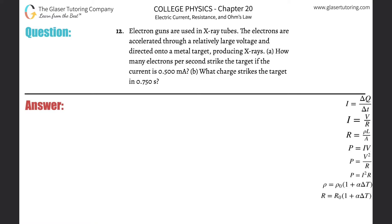Number 12. Electron guns are used in X-ray tubes. The electrons are accelerated through a relatively large voltage and directed onto a metal target producing X-rays. Letter A.